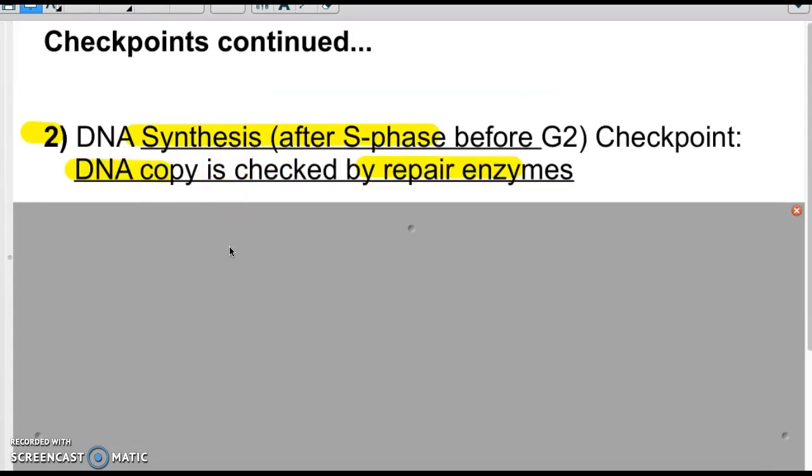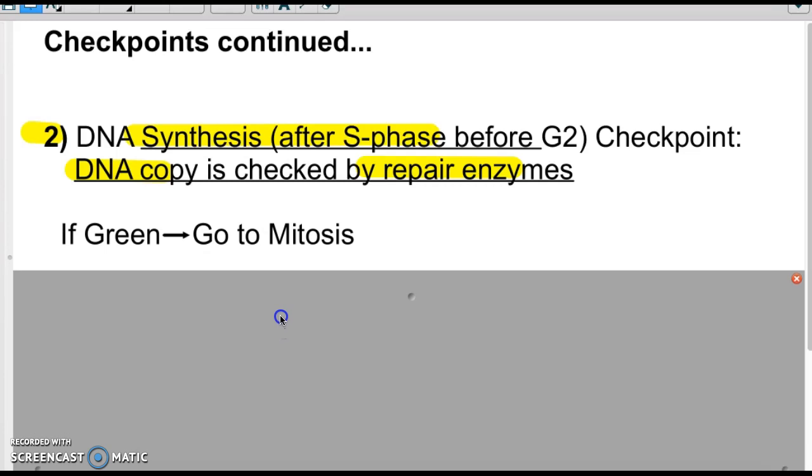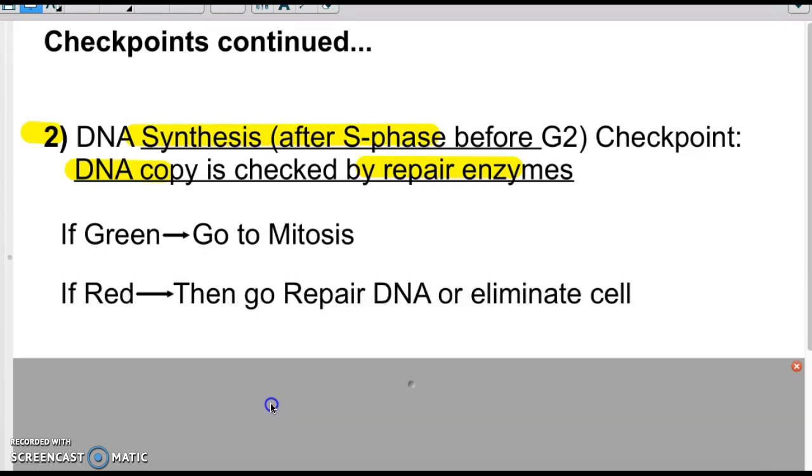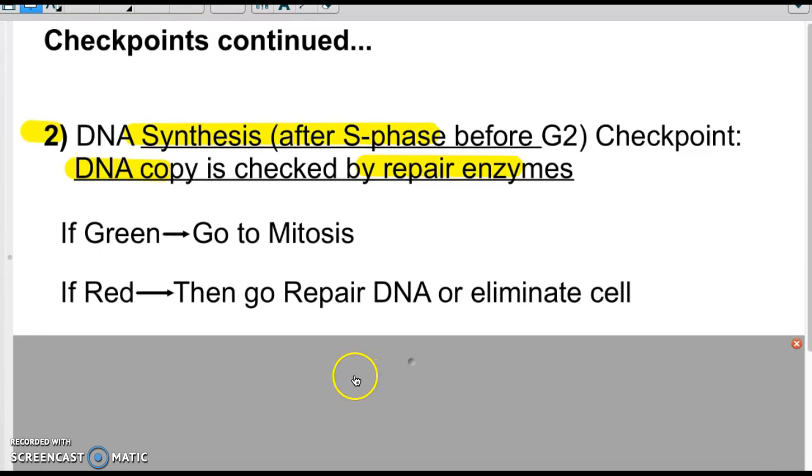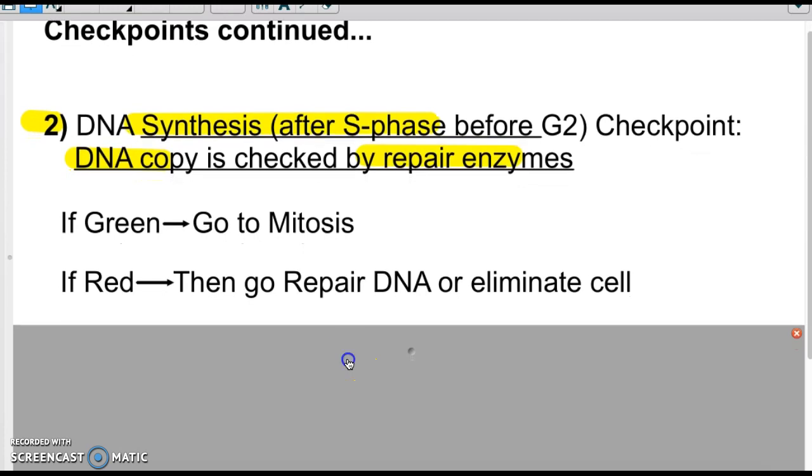All right. The second checkpoint, if you're green, good to go, is you're going to move on to DNA synthesis. Now, syn is a root word that means together. So it's basically assembling and making a copy of DNA. This happens during S phase. They're going to check to make sure that the DNA has been copied correctly, and they're going to check and make sure it's all perfectly copied. And if not, it needs to be repaired. So if it's a green light go, this checkpoint is good, it's going to move on to mitosis. And if it's a red light, then it means it needs to repair the DNA. If it can and if it can't, it will be eliminated.